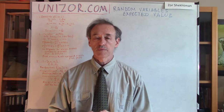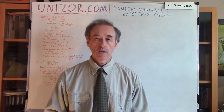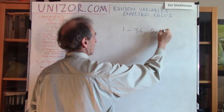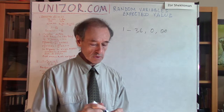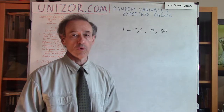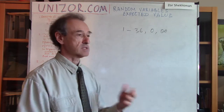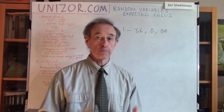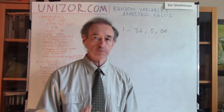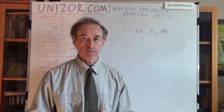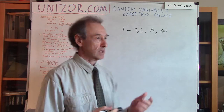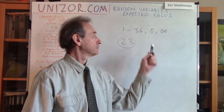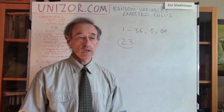The American version of this game has 36 numbers from 1 to 36, 0 and double zero — so 38 different partitions on the wheel. You're spinning the ball and the wheel, and after they stop spinning, the ball falls into one of these partitions. You have a choice to bet on something, but we will consider only one particular version when you are betting on a certain number — let's say, number 23.